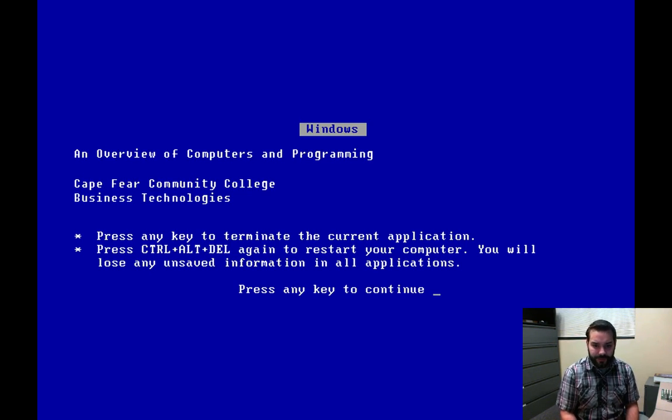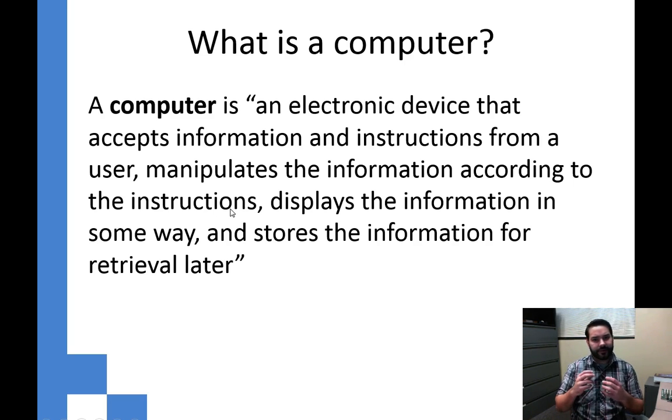So if we think about what a computer is for a second, the computer is simply this electronic device that all it does is it interacts with the user. For example, I type on my keyboard, I swipe my credit card at the self-checkout line, I talk into my phone. Those are all inputs.